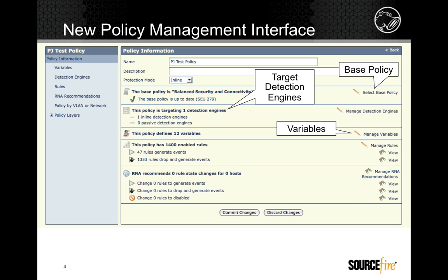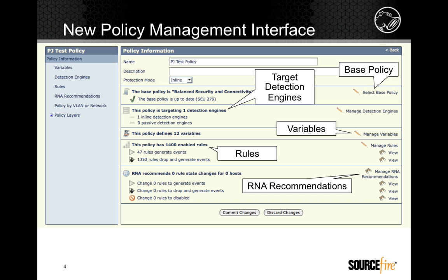Variables are common values used to determine how intrusion policies perform their detection. The Sourcefire Vulnerability Research Team writes Sourcefire's default set of rules, each created to look for the triggering conditions of a vulnerability. RNA can recommend tuning actions for an intrusion policy based on the systems and services it sees active in a network — these are called RNA recommendations.